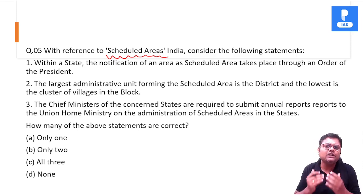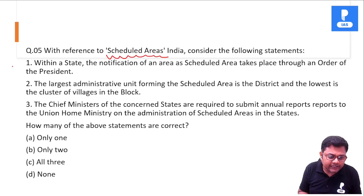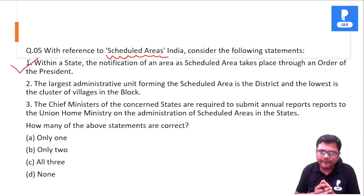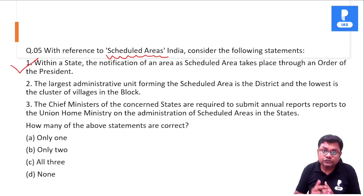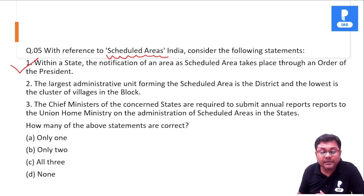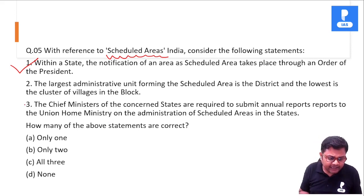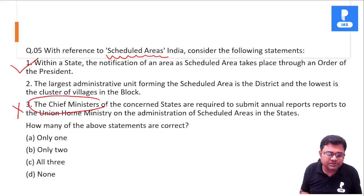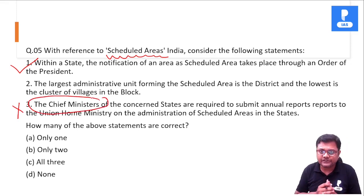The first statement is absolutely correct, and this information is given in the 5th Schedule of the Constitution. The third statement — that the Chief Ministers of concerned states are required to submit annual reports — is incorrect, because it is the Governor's responsibility, not the Chief Minister's.